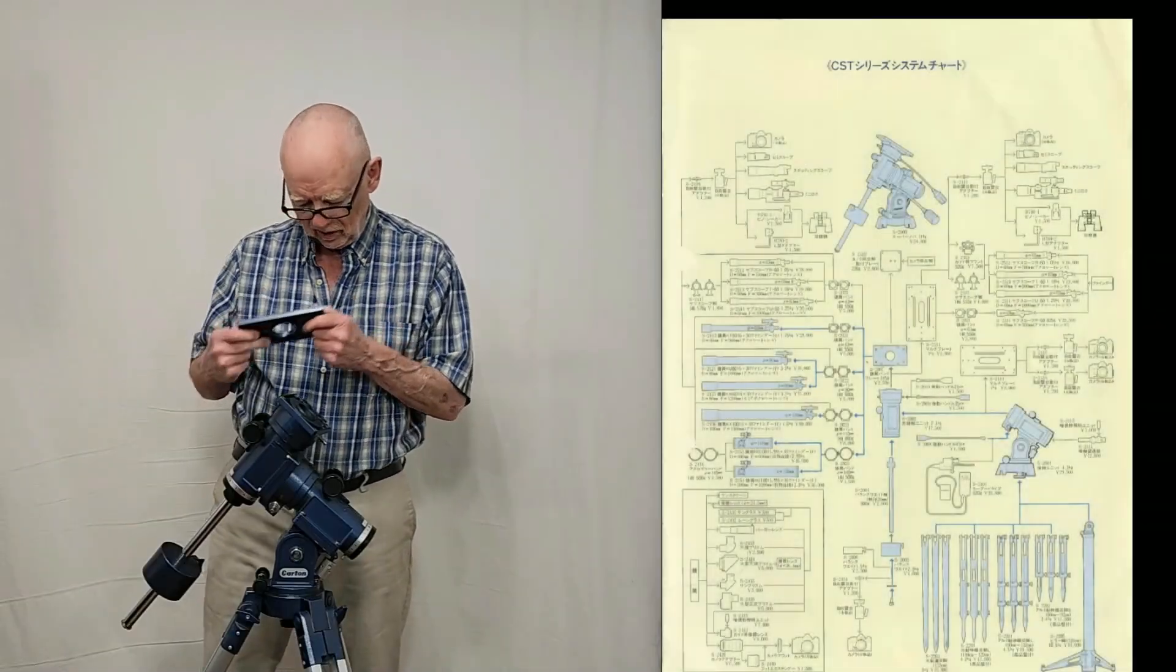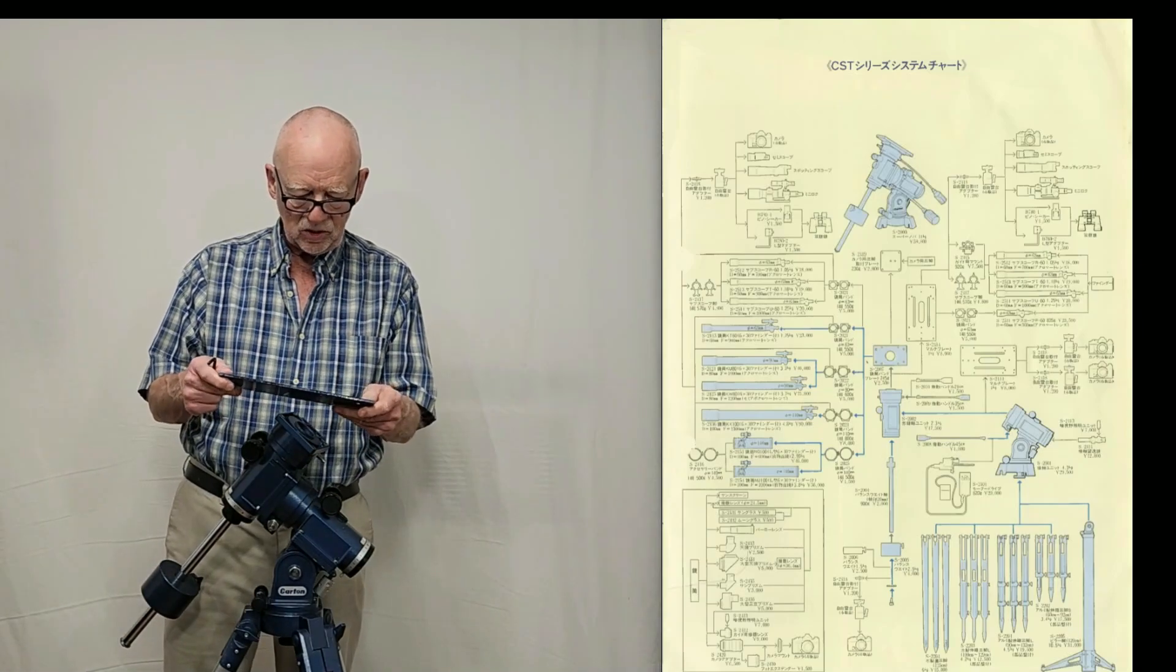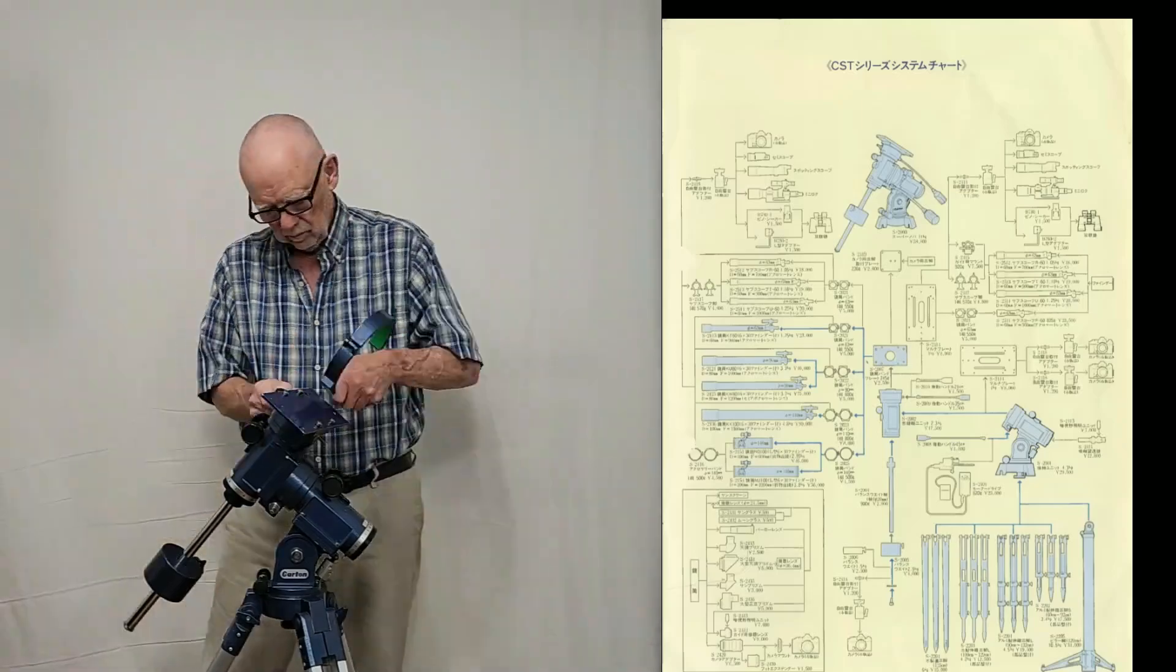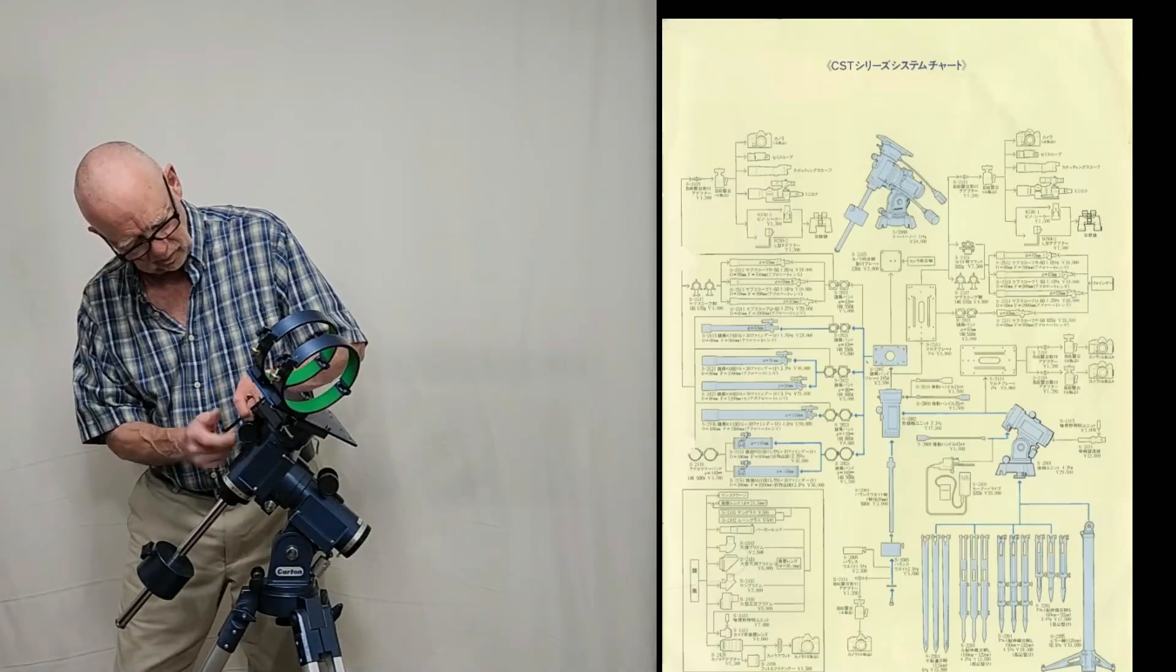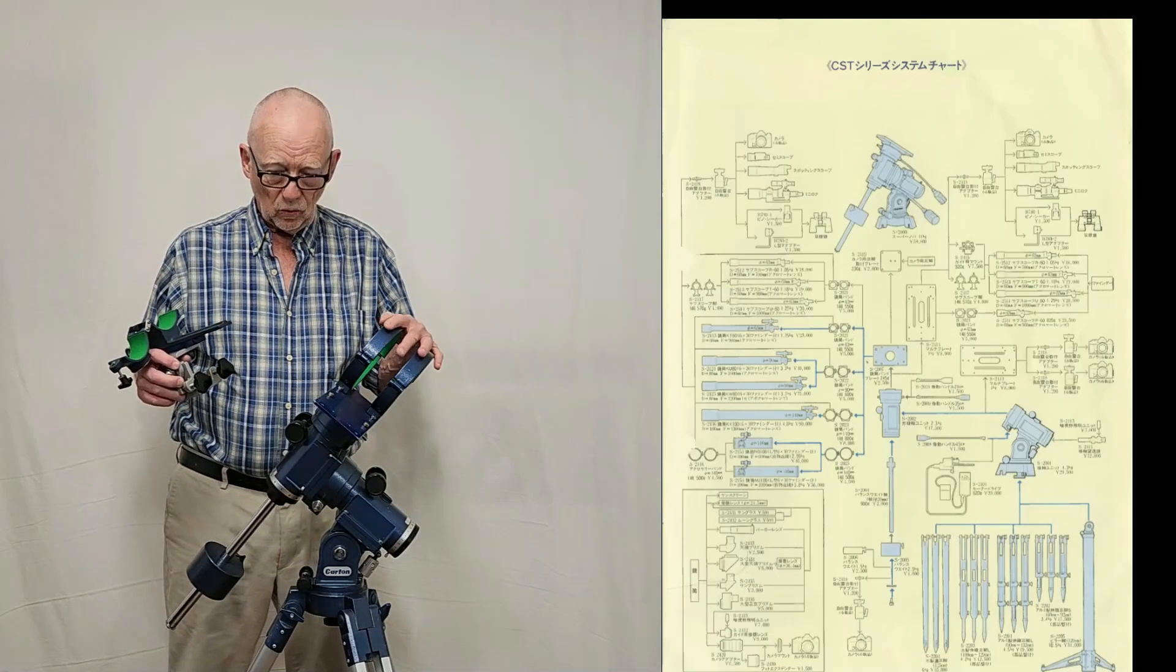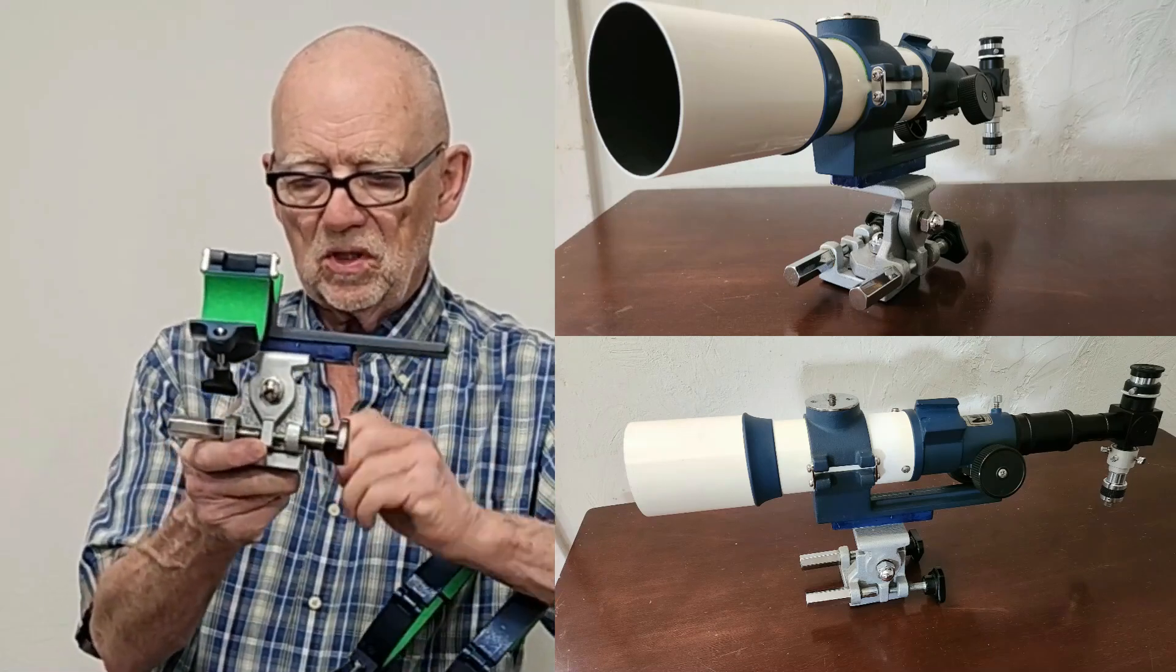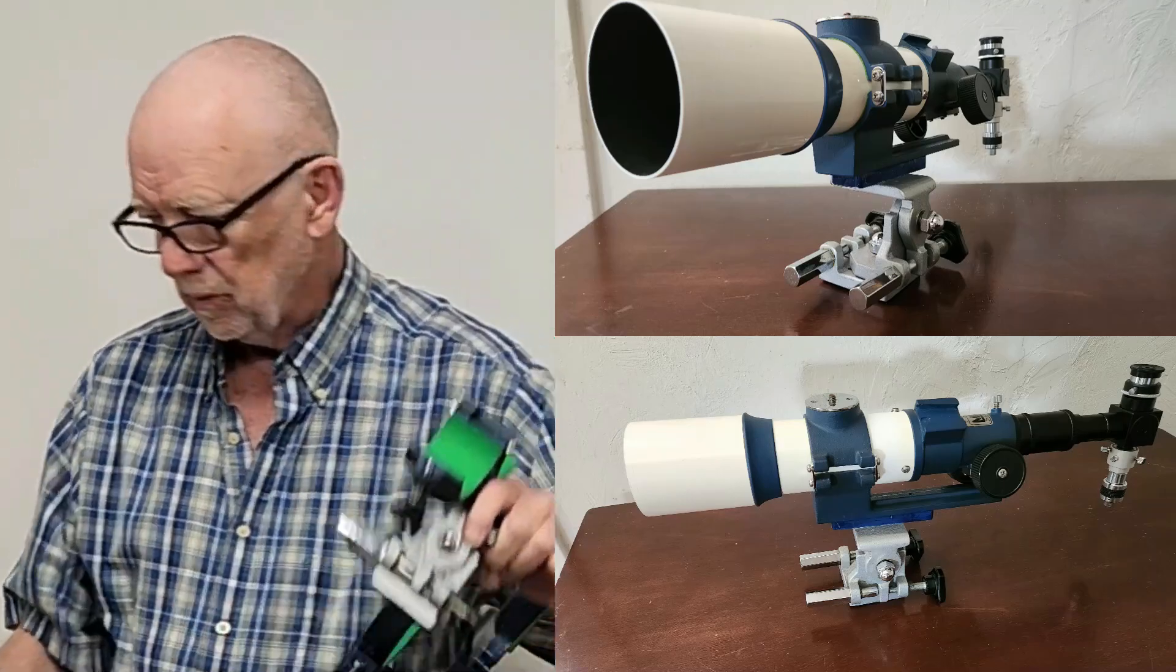So now we have the rings set up for the four inch scope and we're going to have a guide scope on this device. This is of course a setup to adjust a guiding telescope. We'll mount this to this plate.